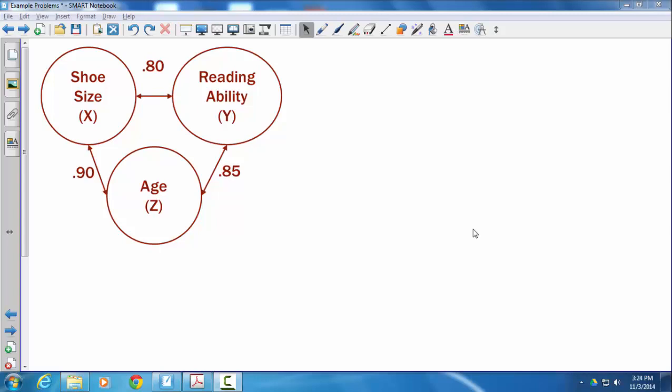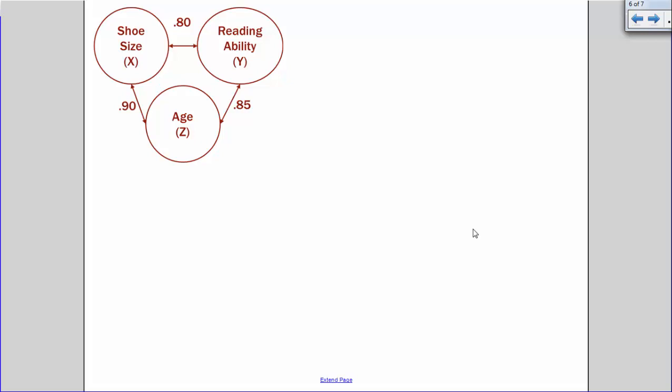This video is going to show you how to compute the partial correlation coefficient to see if the relationship between x and y is actually due to a z variable, a third variable.